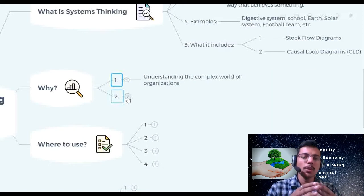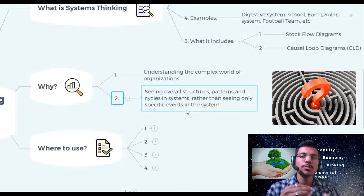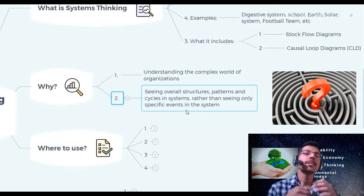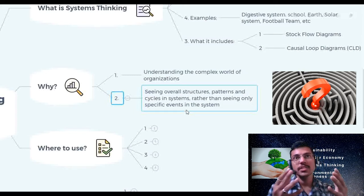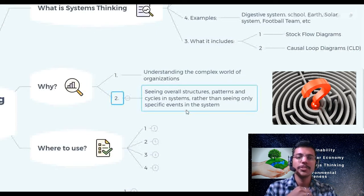Second is seeing overall structures, patterns, and cycles in systems rather than seeing only specific events in systems. Many times we are prone to react to the specific events and that might lead to some problems in the future. So it is very essential to see the structures, the patterns, the mindset, or what we can say the belief system that is behind the problem. With systems thinking, we really try to analyze problems at such a deeper level and try to solve it in a holistic way.